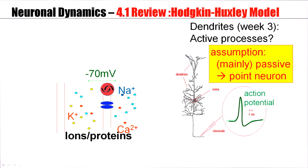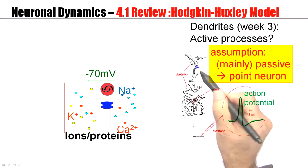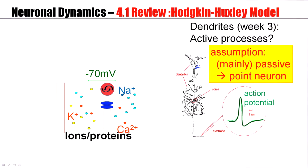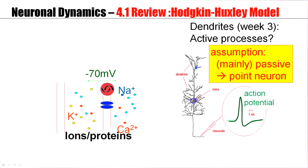If you assume that the dendrite is passive, then indeed the main function of the dendrite is to provide a filtering. Signals that arrive in the upper branches of the dendrite give rise to a filtered input at the soma. But all the decisions about generating the action potential or not are taken at the soma. And in this case, in the case of a passive or mainly passive dendrite, it's possible to reduce the description to that of a point-neuron model.